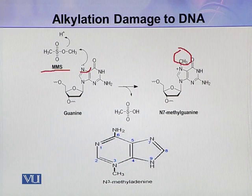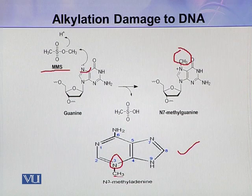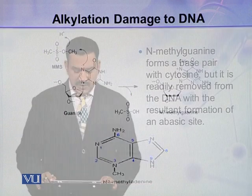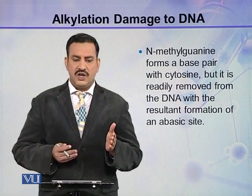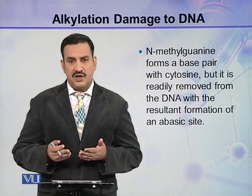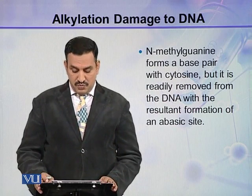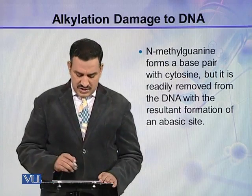This is the most frequent methylation by MMS or MNU. Similarly, adenine may also be methylated, but this methylation takes place at nitrogen-3. This methyl group has been added at N-3 of adenine, forming N-3 methyl adenine. N-methyl guanine forms a base pair with cytosine — this is normal base pairing — but it is readily removed from the DNA, resulting in the formation of an abasic site, which may be dangerous for the DNA.